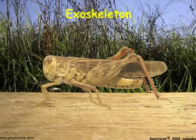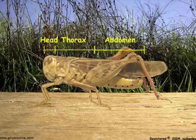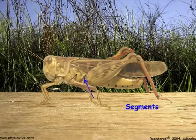The exoskeleton also protects against infection by microorganisms. The insect body is divided into three major sections: the head, the thorax, and the abdomen. Each of these sections is further divided into segments.